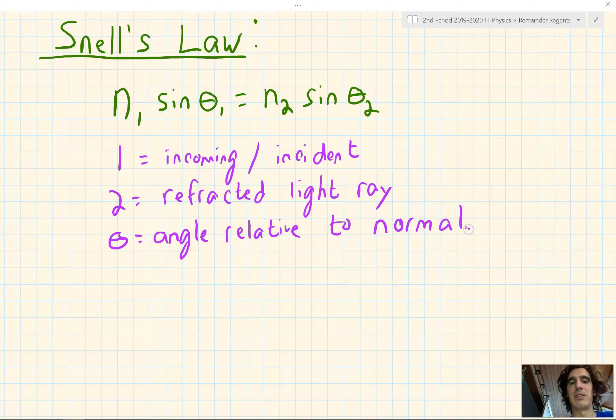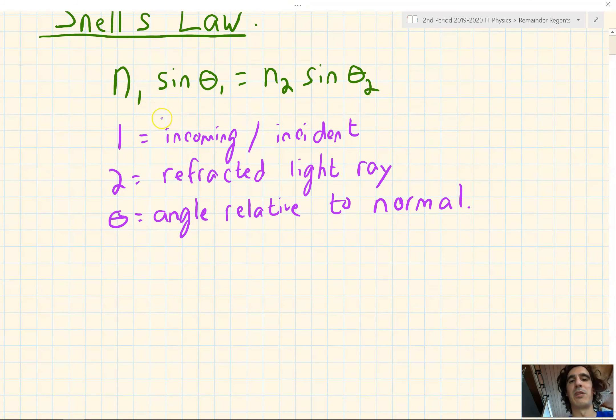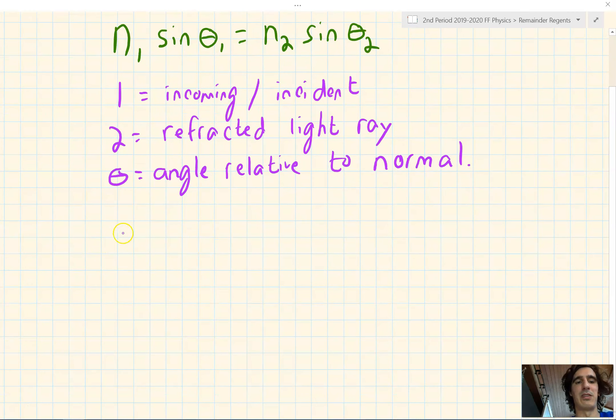What we're going to do next is take this formula, Snell's Law, n₁ sin θ₁ equals n₂ sin θ₂, and make some extra formulas with it. So the first thing we'll do is get our n's on one side and our sine of thetas on the other side. So that leaves us with n₁ over n₂ is going to be sine of θ₂ over the sine of θ₁.